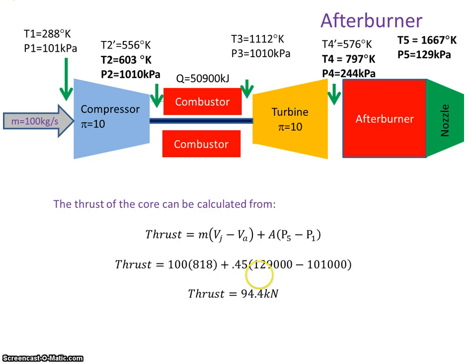Okay, I now calculate the thrust. Well, the aircraft is stationary. So mass by velocity of jet is 100 by 818, plus the pressure thrust is the area of the nozzle and the pressure differential. 129 kilopascals here, 101 kilopascals here. And I plug those numbers in, I get 94.4 kilonewtons.